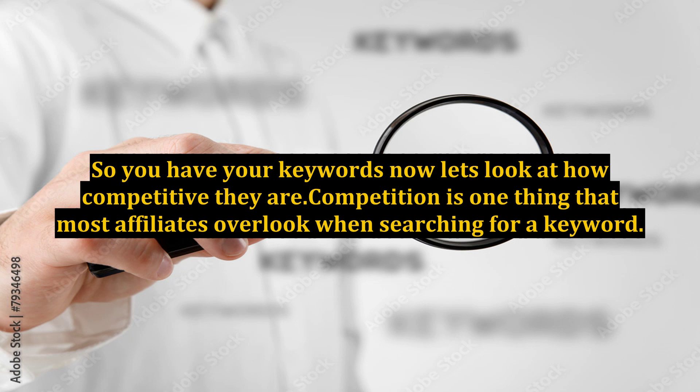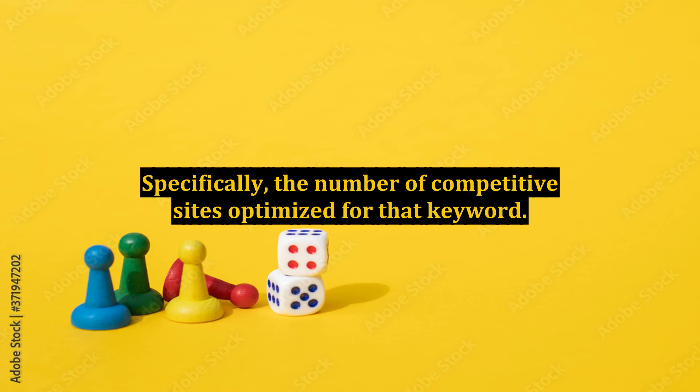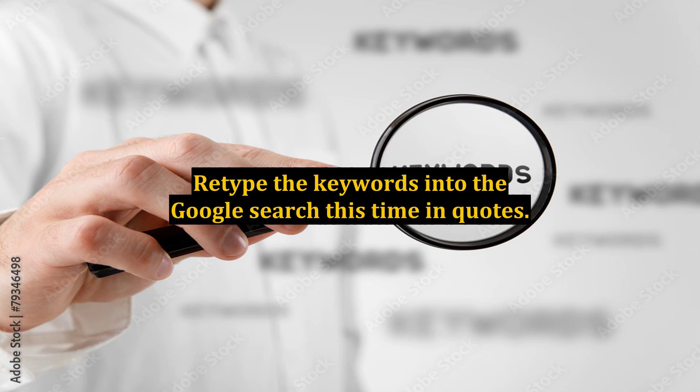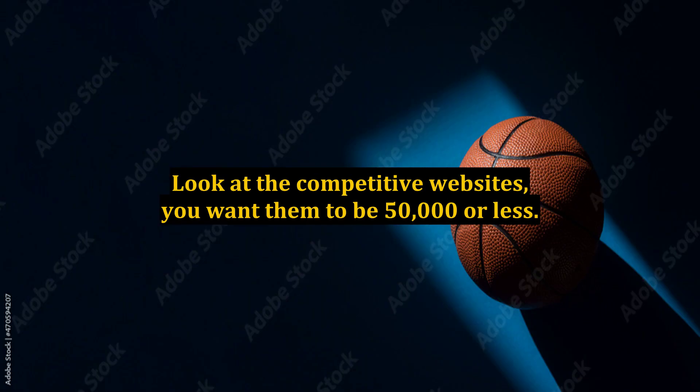So you have your keywords — now let's look at how competitive they are. Competition is one thing that most affiliates overlook when searching for a keyword, specifically the number of competitive sites optimized for that keyword. Retype the keywords into Google search, this time in quotes. Look at the competitive websites — you want them to be 50,000 or less.